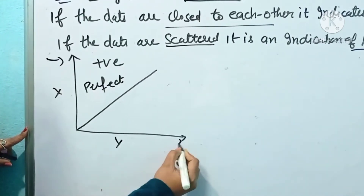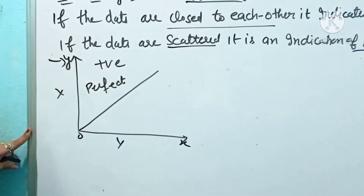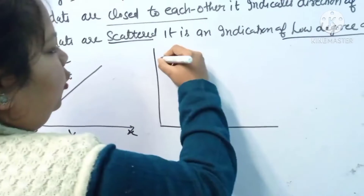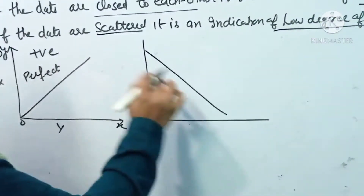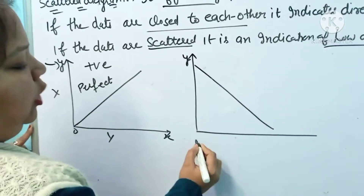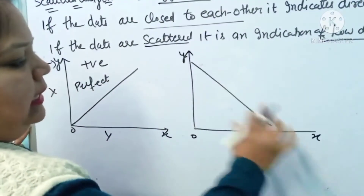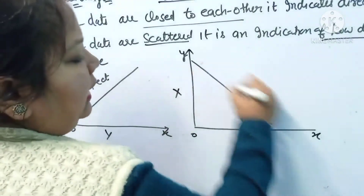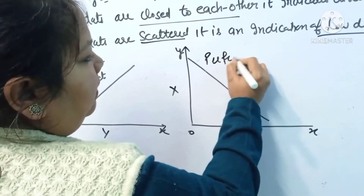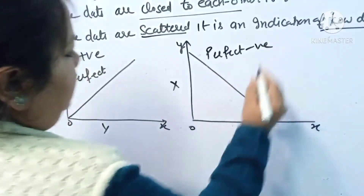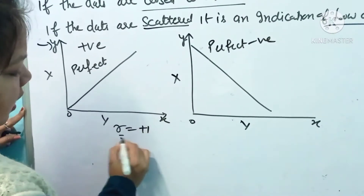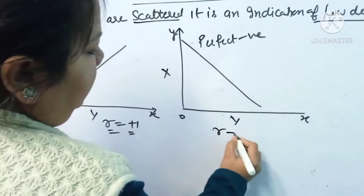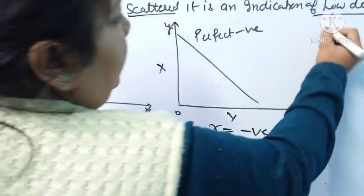All points fall on the same line, showing perfect positive correlation. Now if the direction is downward, it shows a negative relation, so here it is perfect negative. The r value here is plus one for perfect positive. Correlation is represented by r, and the coefficient of correlation is presented as r. For perfect negative, the r value is negative one.